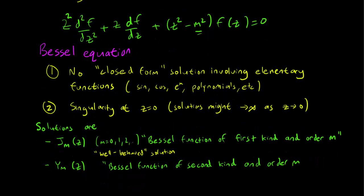Secondly, we have Y_m(z), which is the Bessel function of the second kind and order m. And this is known as the singular solution, because this solution does head towards infinity as z goes to 0.